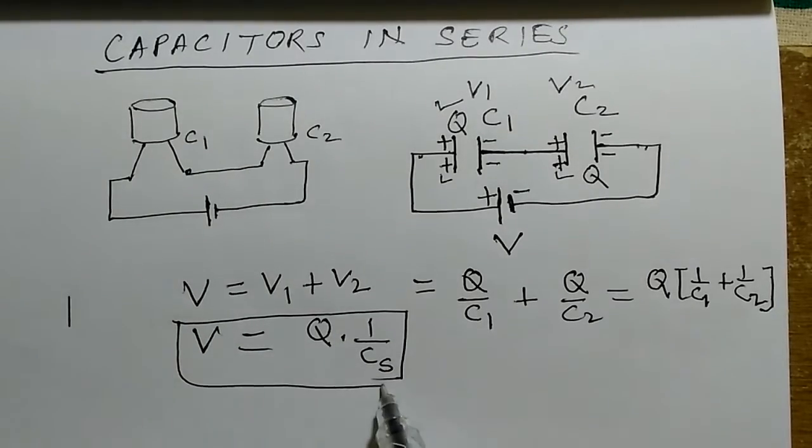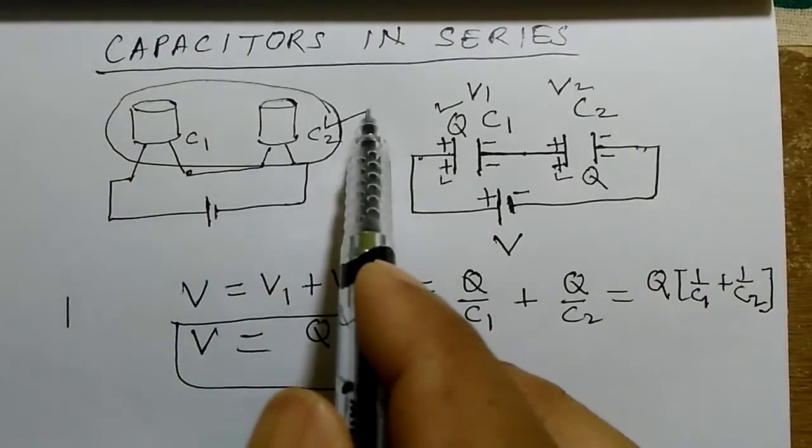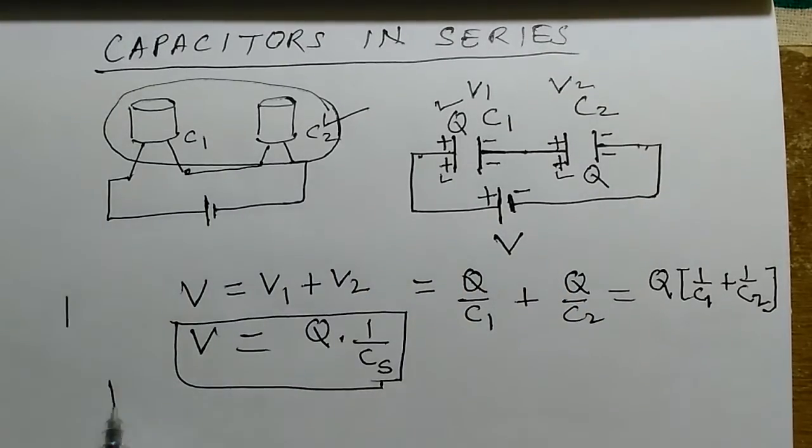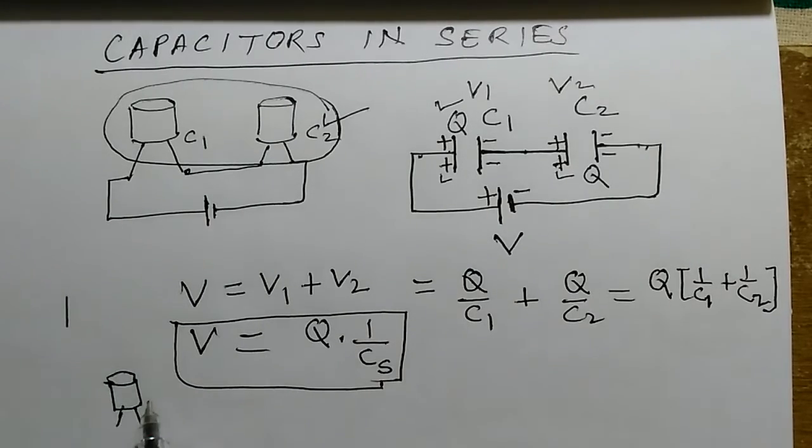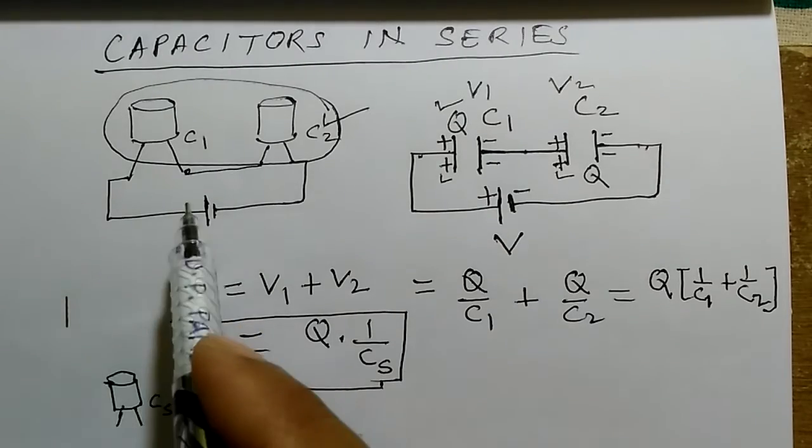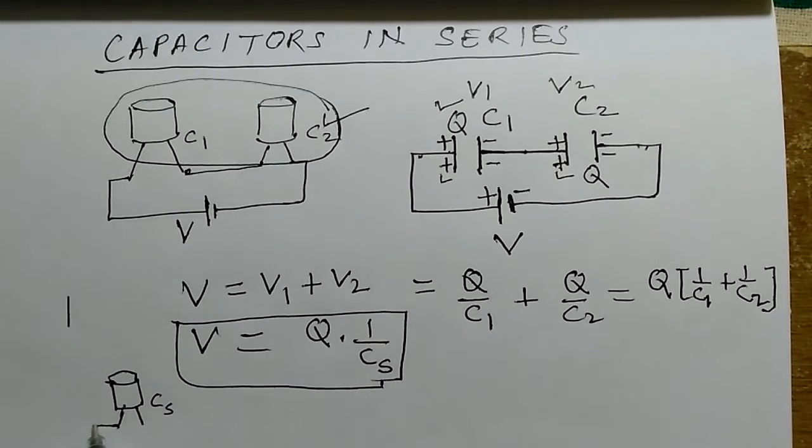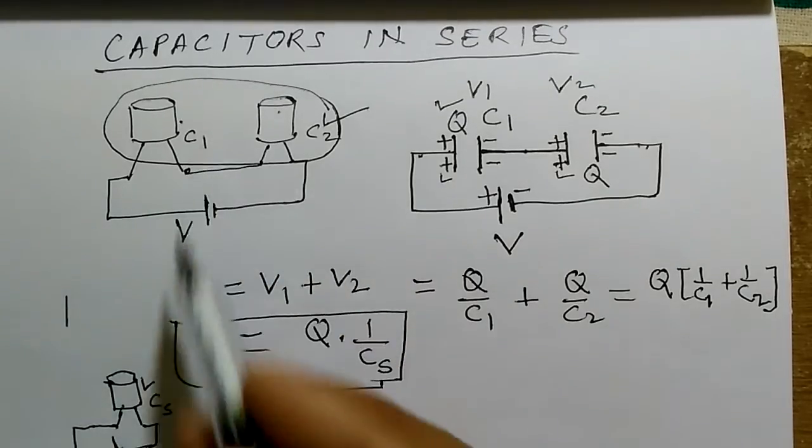So it means we can replace these two capacitors, and at their place I can put only one capacitor which is having a value of Cs, that is the equivalent capacitance. And when they are connected to this potential difference V, then they will store the same amount of charge as these two store together.